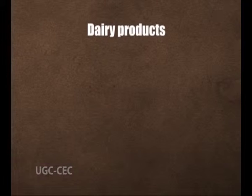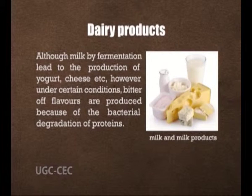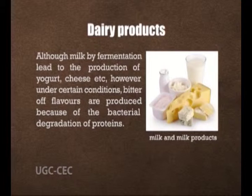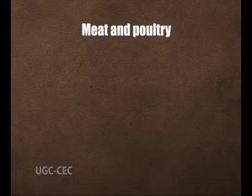Different foods spoil in different ways depending on their nutrient content, microbial species and environmental factors such as temperature. For dairy products, although fermentation of milk leads to yogurt and cheese, under certain conditions bitter flavors are produced because of bacterial degradation of proteins. This protein degradation is commonly caused by psychrophilic organisms, which can grow at very cold temperatures. Cheese is less susceptible than milk to spoilage because of its solid structure and lower water activity.